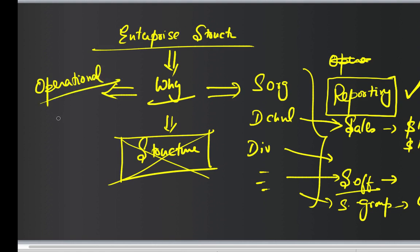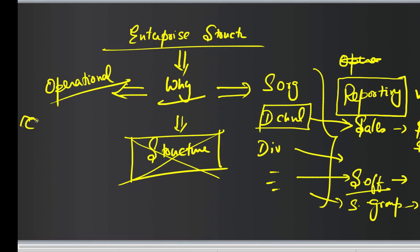Operational means you want to give a special discount — for example, a coupon — but only to a retail distribution channel. So unless you classify a customer as belonging to retail, or a transaction like a sales order as belonging to a retail segment, you can't really give that coupon out. You only want to give it to a retail customer.